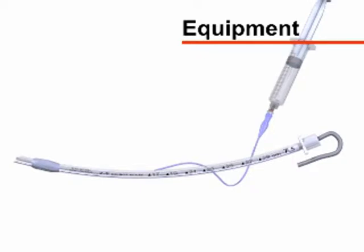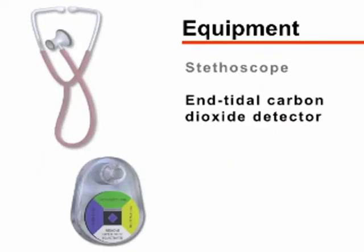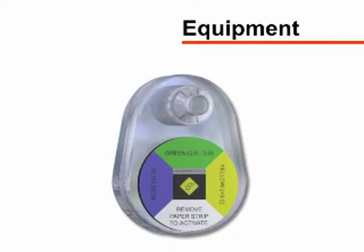The tubes have a balloon on the distal end that, when inflated, creates a seal between the tube and the tracheal lumen, preventing air leaks and aspiration of gastric contents. You will also need a stethoscope and an end-tidal carbon dioxide detector to assess for proper placement of the endotracheal tube. Commonly used detectors change color in the presence of carbon dioxide.